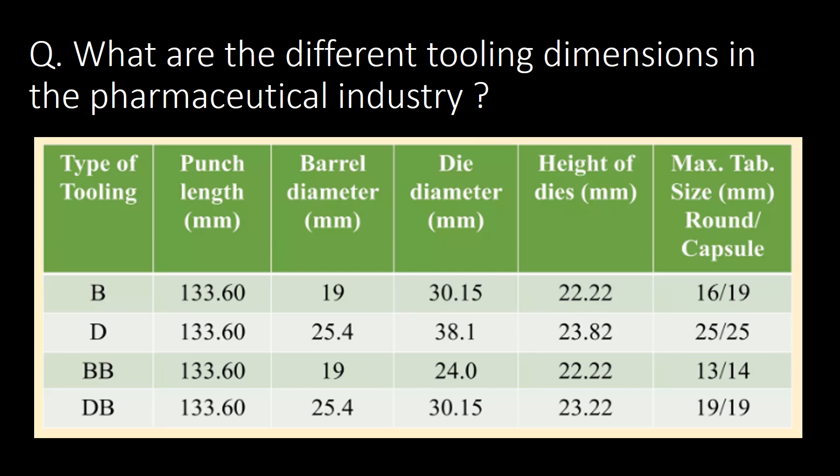What are the different tooling dimensions in the pharmaceutical industry? You can refer to the table below for type of tooling, punch length, barrel diameter, die diameter, height of dies, and maximum tablet size formed with each tooling type.